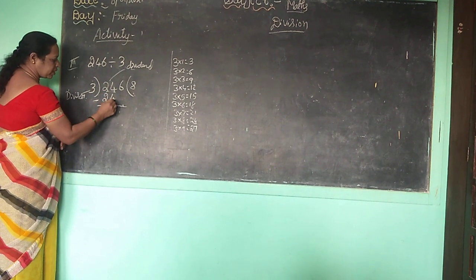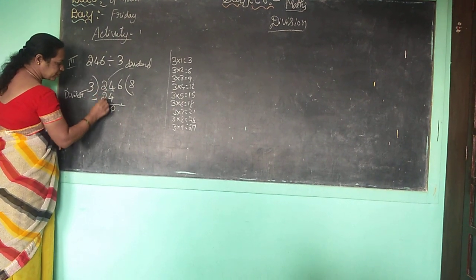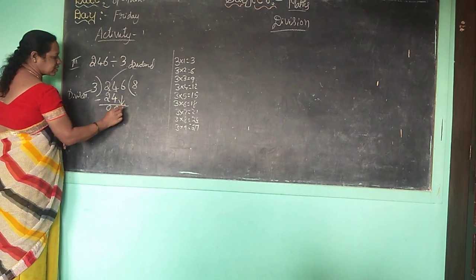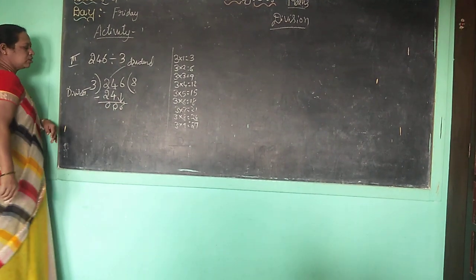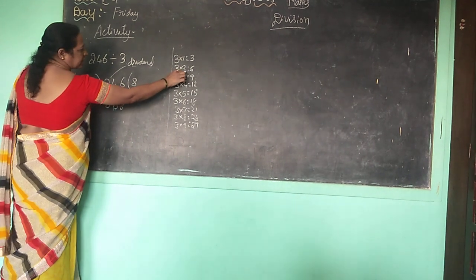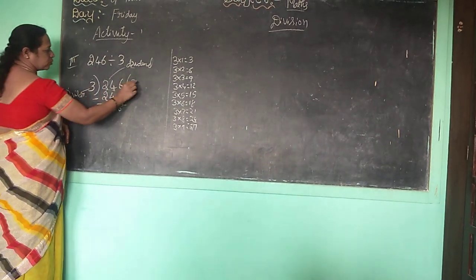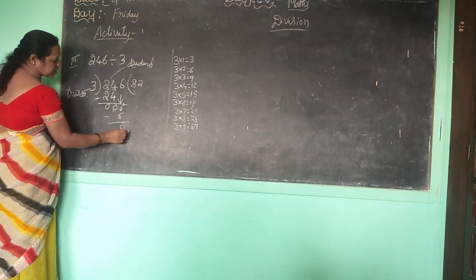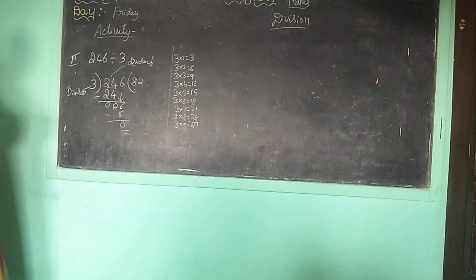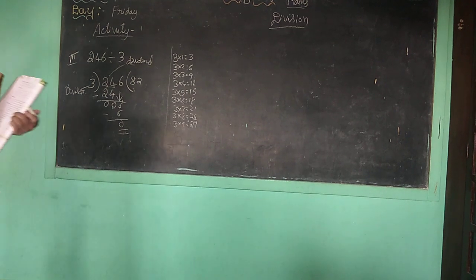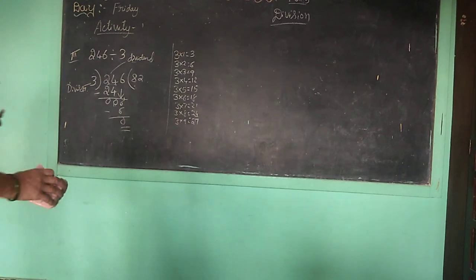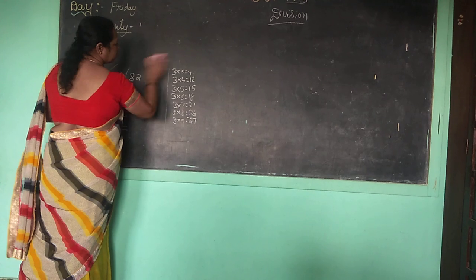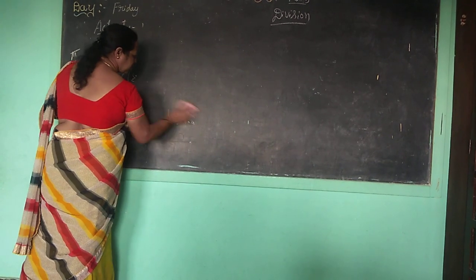Now minus: 4 minus 4 is 0, 2 minus 2 is 0. Take 6 down. 6 is in the 3 times table — 3 twos are 6. Minus: 6 minus 6 is 0. So this is the long division method. You have to know the tables — without tables you can't do it.